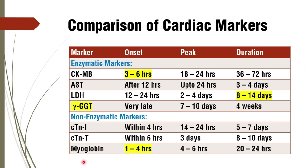Coming to the non-enzymatic markers: cardiac troponin I and T start rising within 4 hours — almost similar to CKMB. But cardiac troponin T remains elevated for a maximum of 10 days. And myoglobin starts rising immediately after myocardial infarction — within 1 to 4 hours.